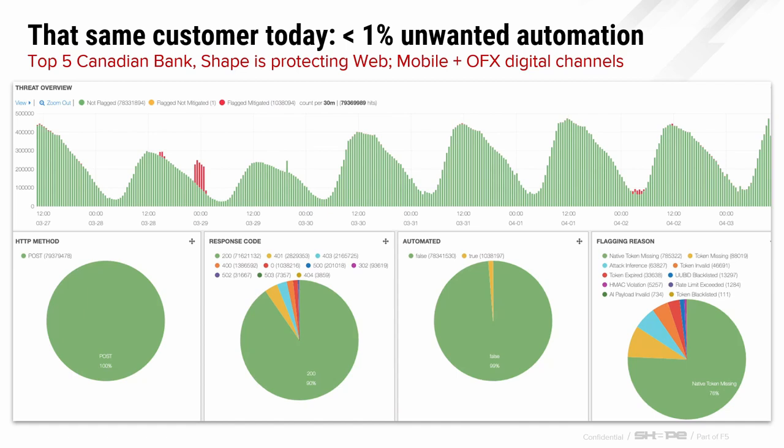What we see today is that same customer whose traffic is now what I like to call clean and green. There's a very evident diurnal day-night pattern where human users are not active in the middle of the night. The attackers don't go away — they're pictured here in the little red spikes — however, this customer is known as not a good attack surface. We're protecting them on the web, their native mobile application, as well as their business-to-business APIs, including the OFX digital API channel used by banks to exchange money between each other after hours.